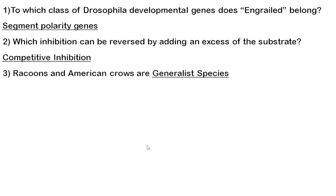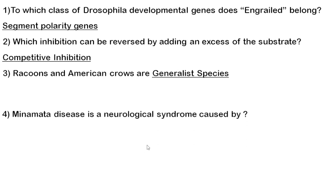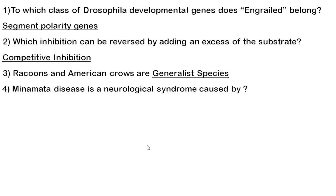Third question: ragoons and American crows are both generalist species. You need to know about specialist, generalist, indicator, flagship, keystone, and umbrella species — their definitions and examples. Match-the-following type questions can be asked about these types of species.